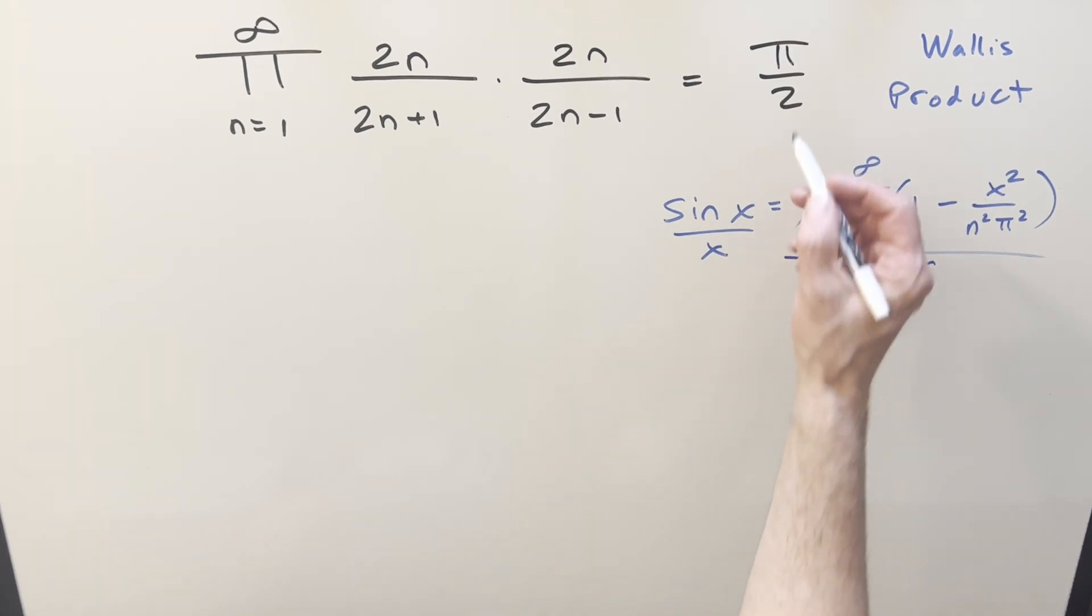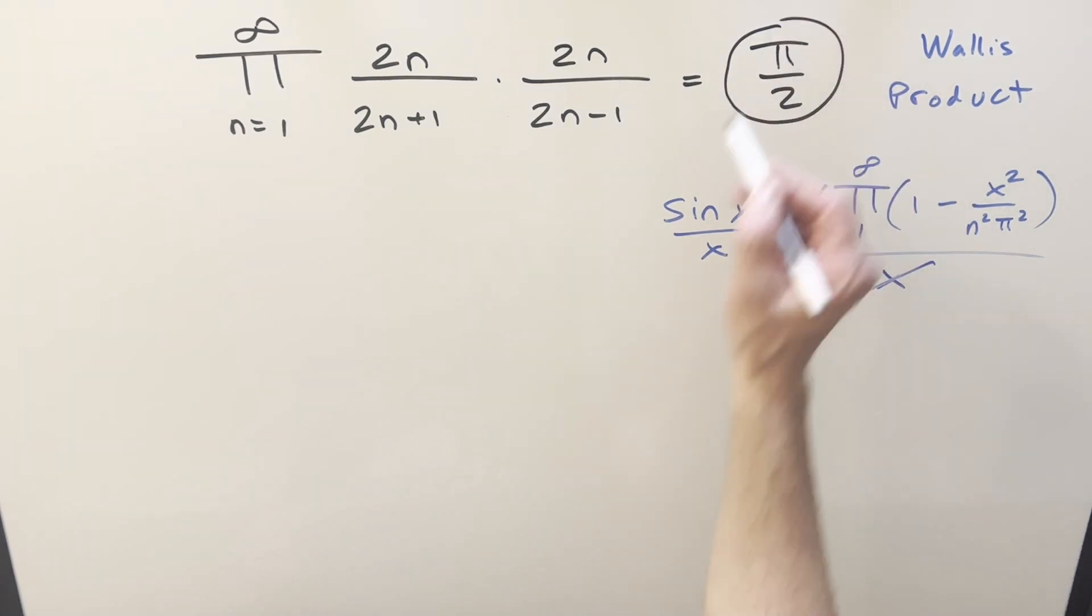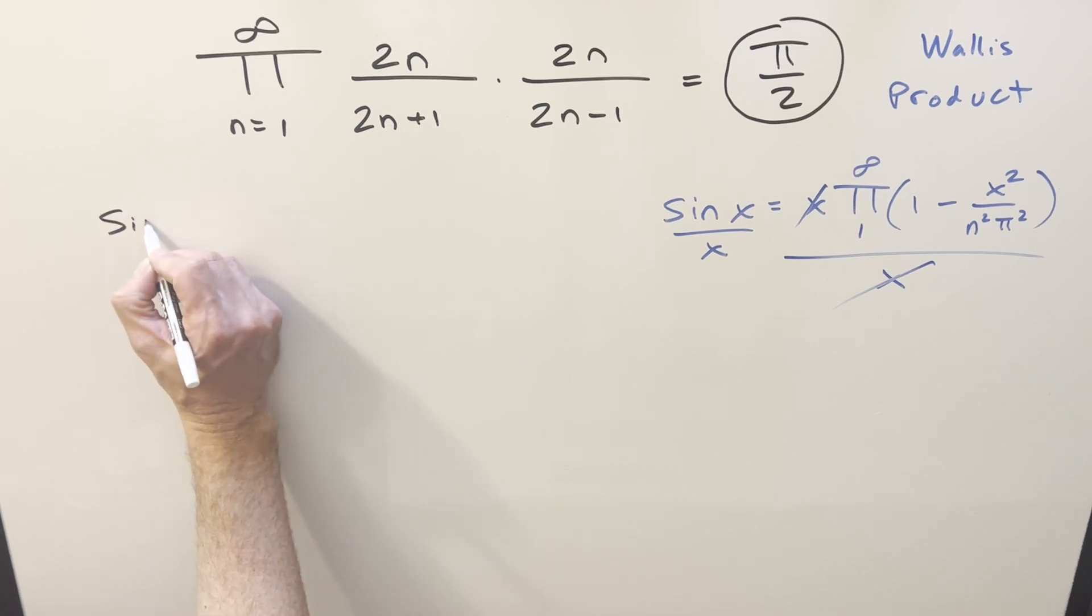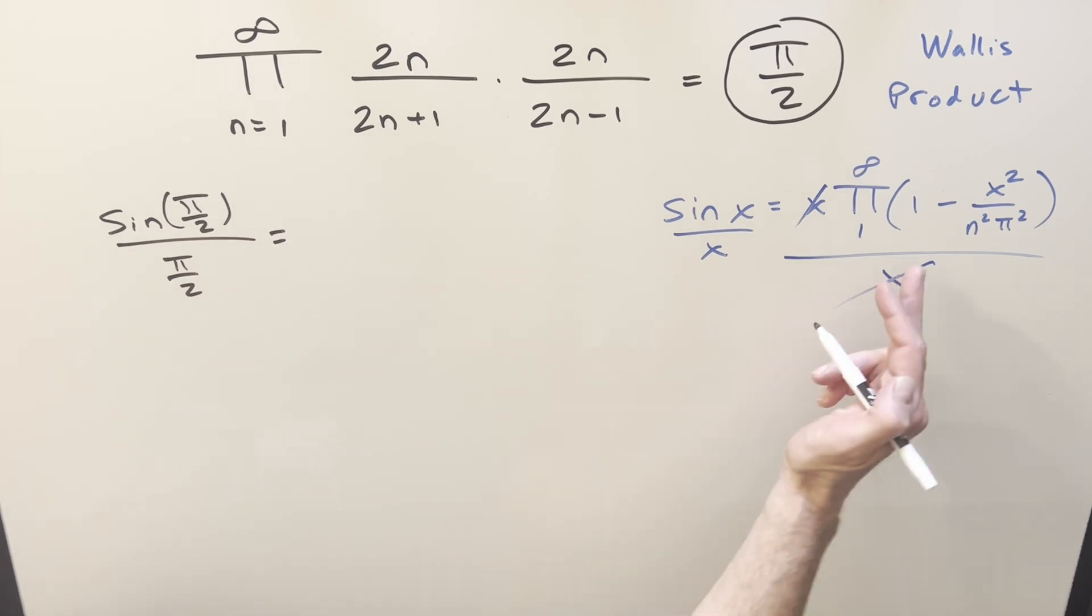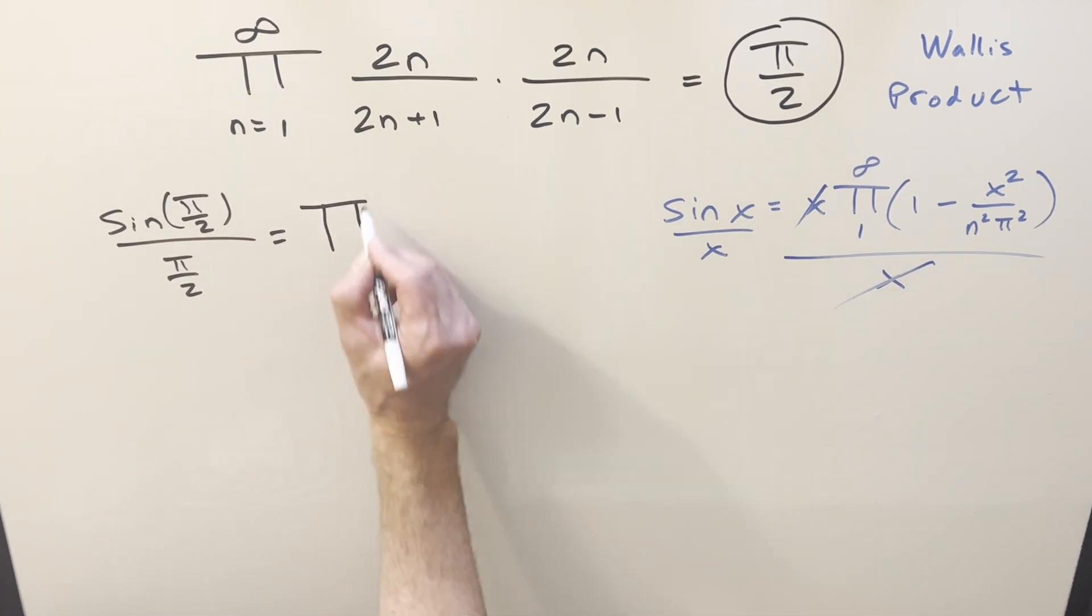And then I want to evaluate x at this value we want, pi over 2. So what we're looking at is we're just going to want to get the value for sine pi over 2 over pi over 2, just plugging into this, where this pi is not this pi. The big pi stands for the product.